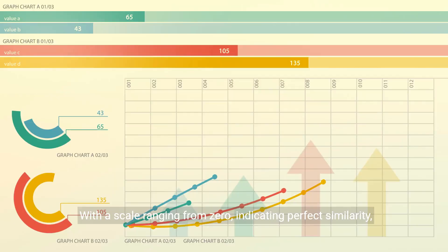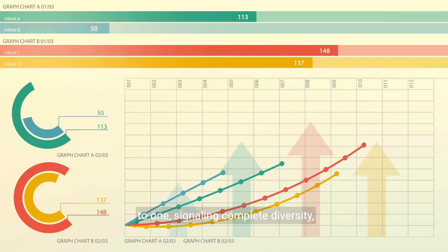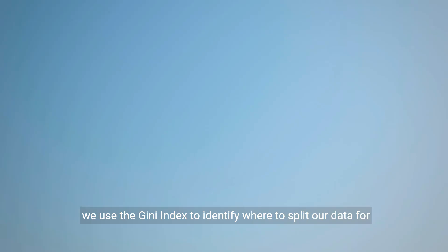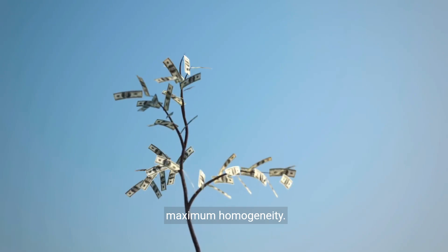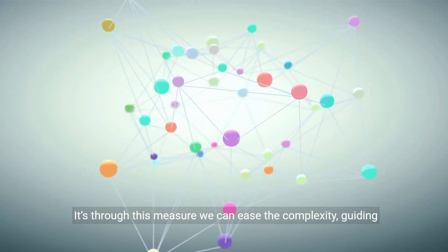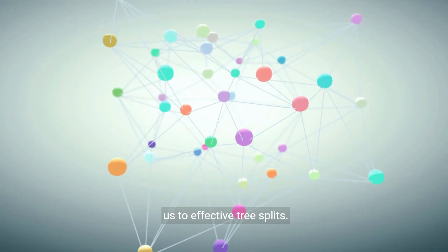With a scale ranging from zero, indicating perfect similarity, to one, signaling complete diversity, we use the Gini index to identify where to split our data for maximum homogeneity. It's through this measure we can ease the complexity, guiding us to effective tree splits.